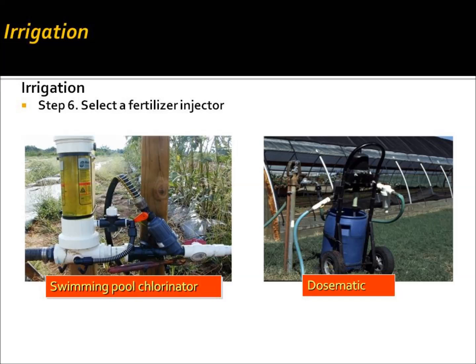Step six is to select a fertilizer injector. If you're utilizing soluble fertilizers, you can inject that soluble fertilizer into the drip irrigation system to apply to the plant throughout the growing season. This can be an efficient use of fertilizers in a production system. Always utilize a backflow preventer so that you don't contaminate the water supply.